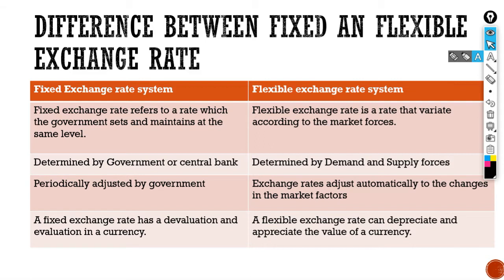The fixed exchange rate system is determined by the government or the central bank, whereas the flexible exchange rate system is determined by demand and supply forces. Under the fixed exchange rate system, the rate is periodically adjusted by the government, which intervenes on a regular basis. Whereas under the flexible exchange rate system, the exchange rate adjusts automatically to changes in market forces — demand and supply fluctuate and automatically adjust the changes.